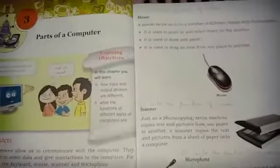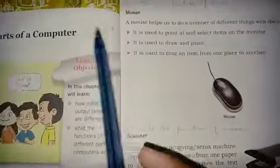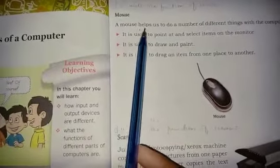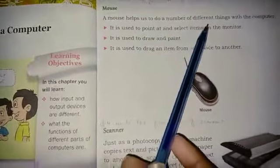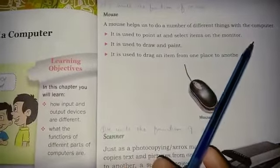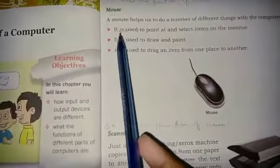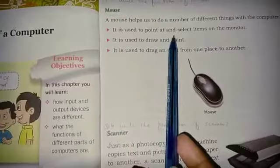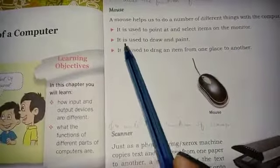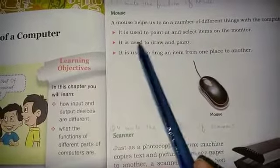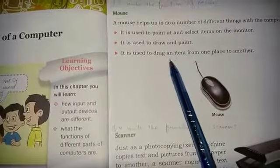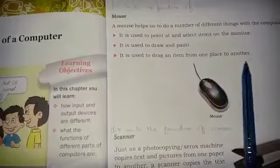Now move to the next input device, the mouse. The mouse helps us to do a number of different things with the computer. It is used to point at and select items on the monitor. It is used to draw and paint. It is used to drag an item from one place to another.